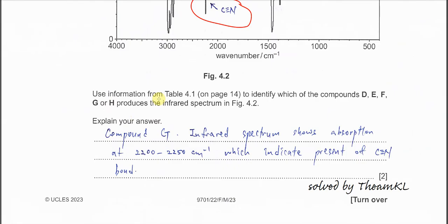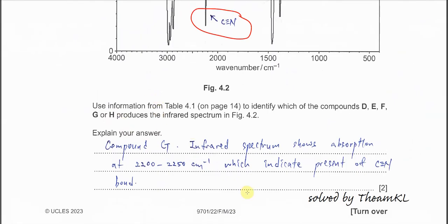Use information in table 4.1 I told you just now to identify which of the compound is it. Of course it's compound G. Infrared spectrum shows absorptions at 2200 to 2250, which indicates there is a presence of C≡N triple bond. That's the answer.